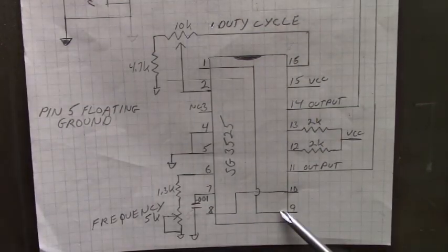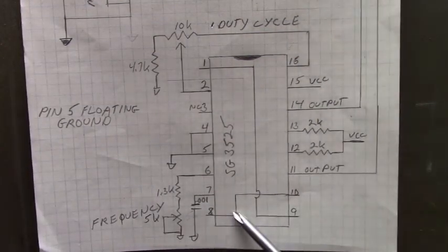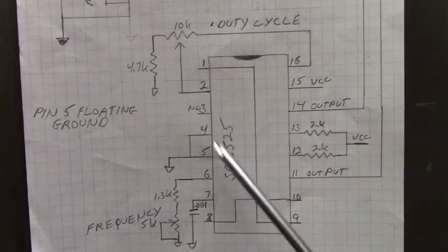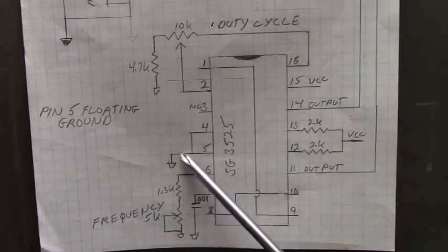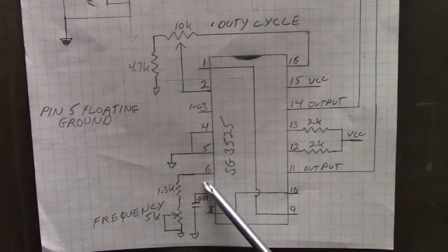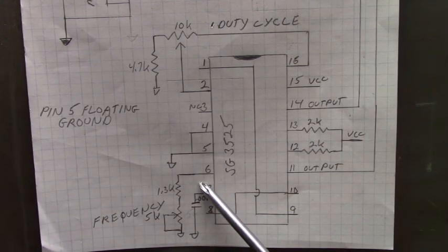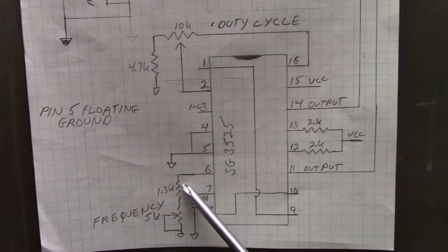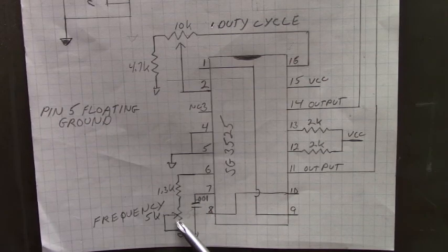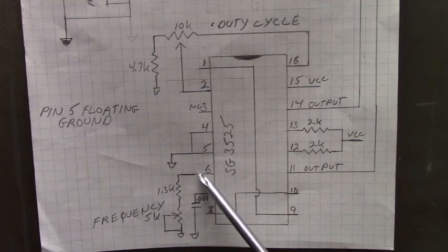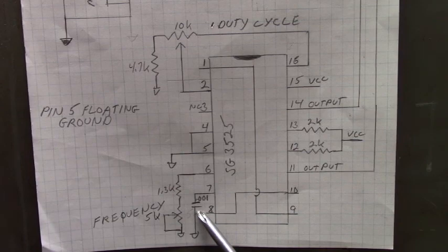Pin 1 and 9 are tied together. Pin 10 and 8 are tied together. Pin 3 not connected. Pin 4 and 5 go to ground. Pin 6 is the potentiometer for the frequency control. A .001 microfarad capacitor for the timing capacitor.